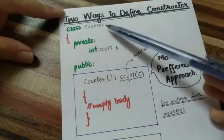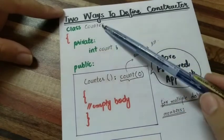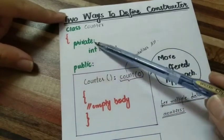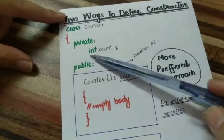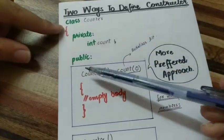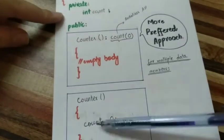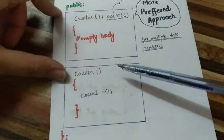First of all, I have made a Counter class. Then I have written a private keyword and defined a data member. Then I have written a public keyword. There are two major syntax approaches.